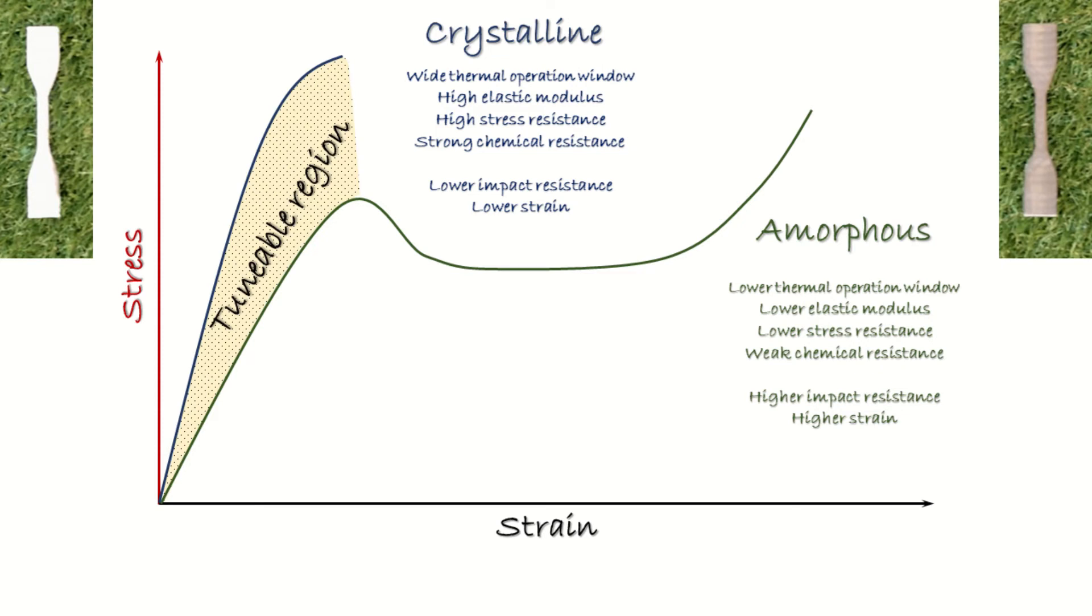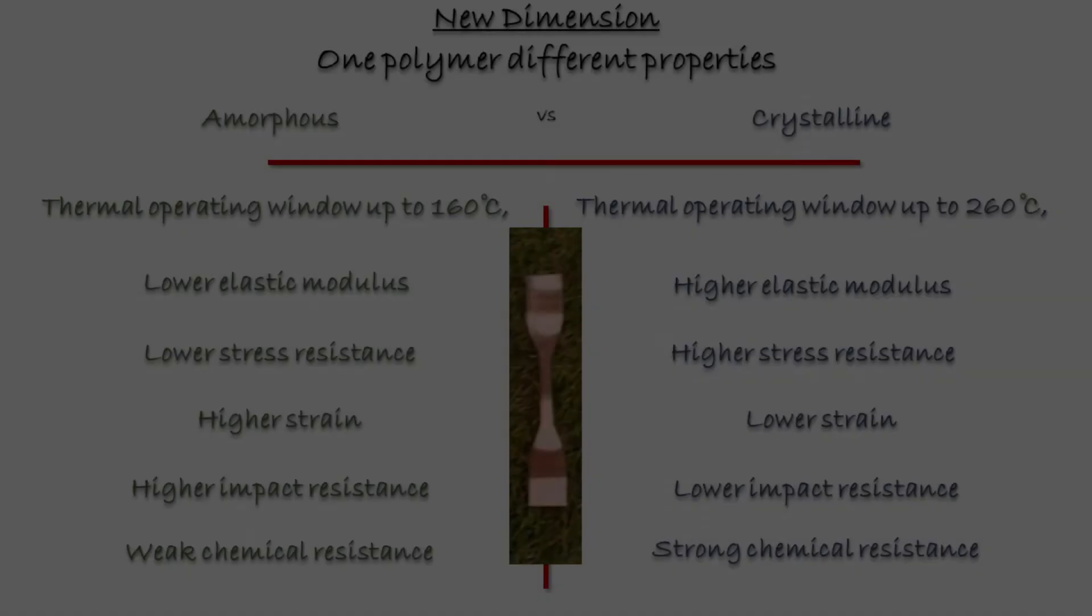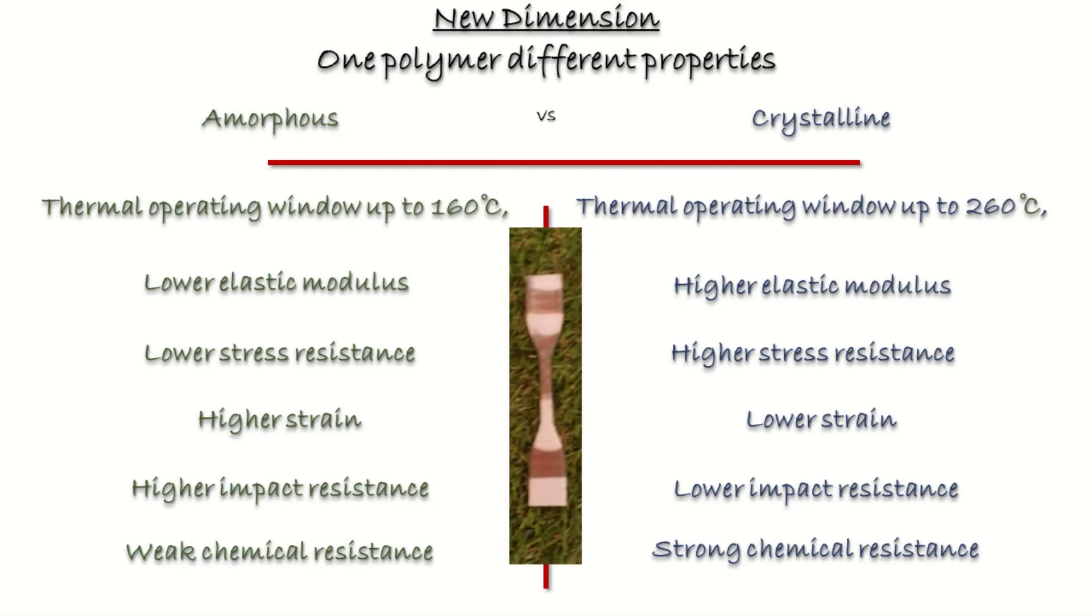And now you can see that between the characteristics of crystalline and amorphous part is a tunable region, which can be adjusted by intensity of the lamp. Moreover, you can assign the intensity of the infrared heater to the layer in your slicer and print with new dimension with tailored properties like never before. Because printing with semi-crystalline polymer gives you ability to have different properties with same polymer.